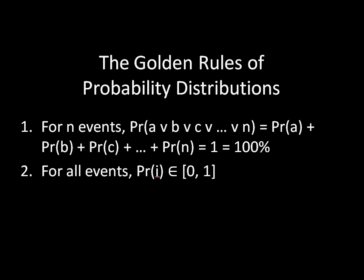There are two of them, and we'll derive the rest just from these two. First, in a probability distribution with n events, if that probability distribution is valid, then the probability that event A, or B, or C, or D, etc., all the way to n equals the probability of A occurring individually plus the probability of B occurring individually, etc. And all of those added together must equal 1, which is the same thing as saying that they must add up to 100%.